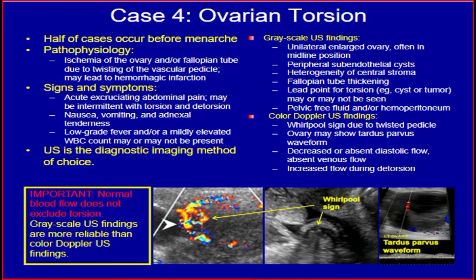Color Doppler ultrasound findings of ovarian torsion: whirlpool sign due to twisted pedicle; ovary may show tardus-parvus waveform; decreased or absent diastolic flow; absent venous flow; and increased flow during detorsion.